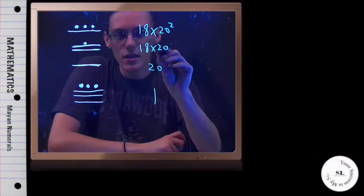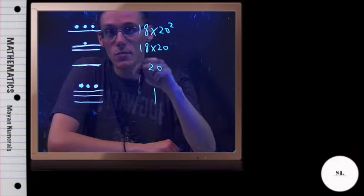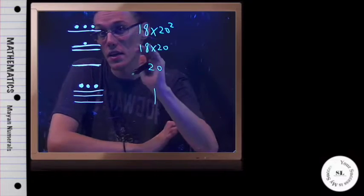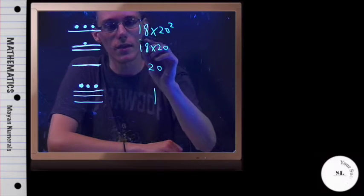So it's thought that the reason they use this, 18 by 20, is because their calendar actually had 360 days, which is what 18 times 20 is. So kind of a cool little thing about that.